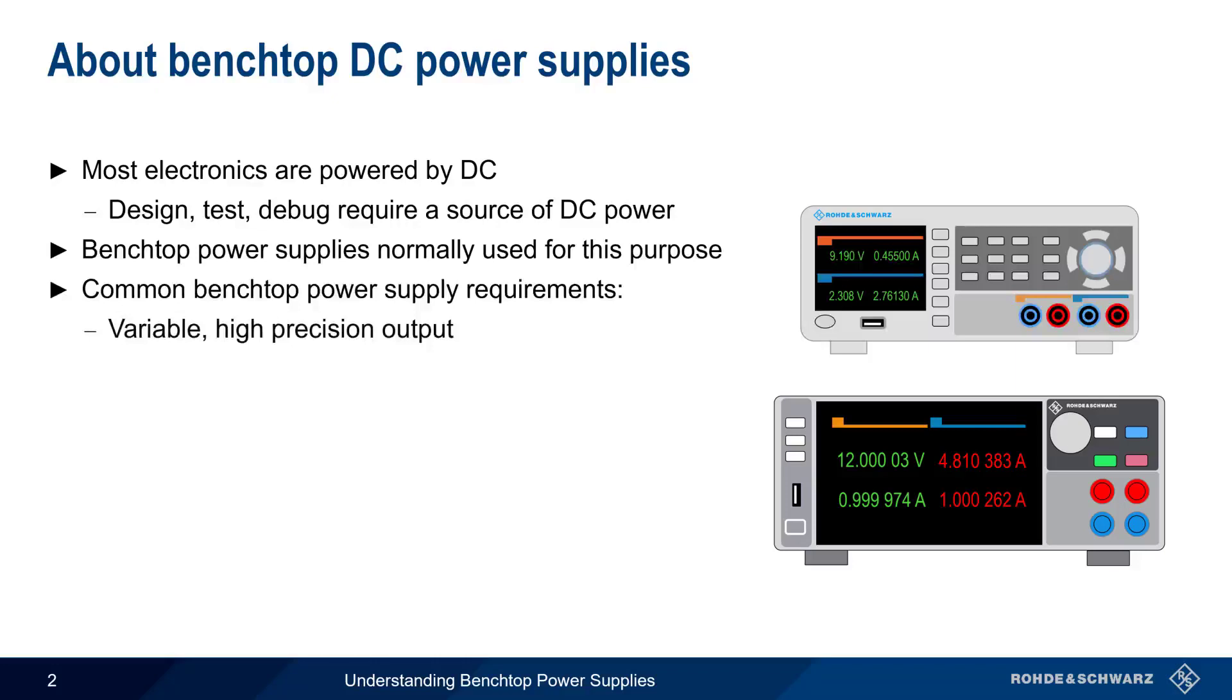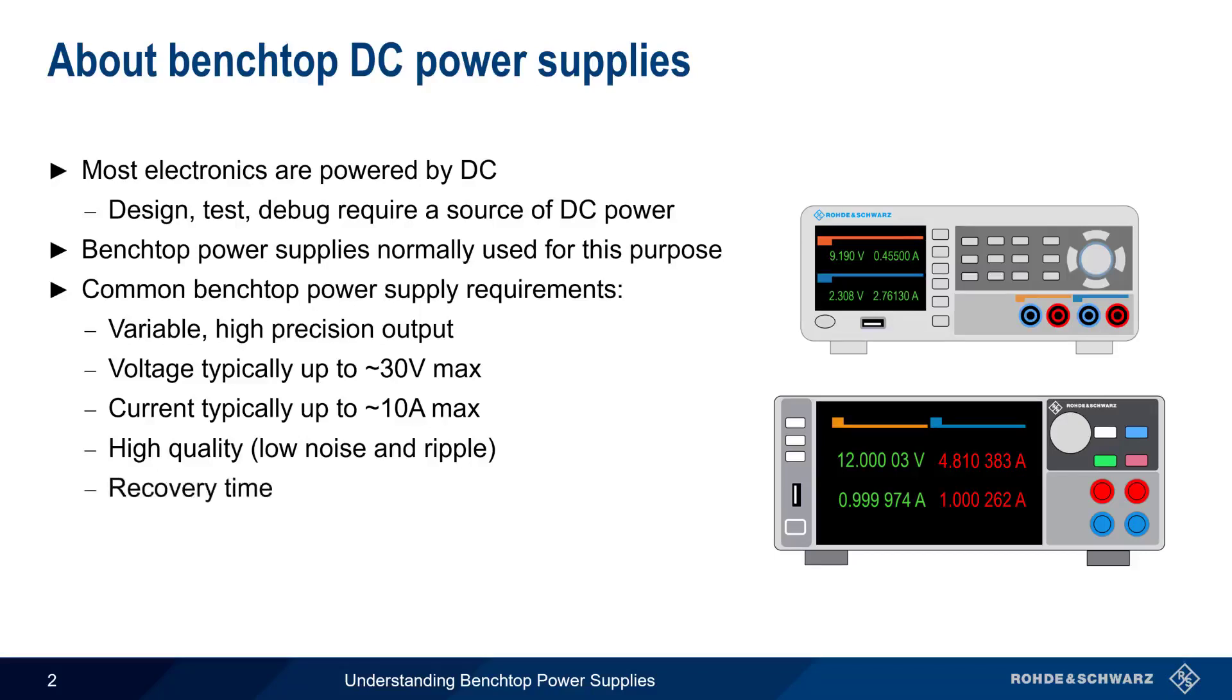The first is a variable, high-precision output. Typically, the maximum voltages are up to about 30 volts, and maximum currents are up to 10 amps. But there are many applications where lower maximum voltages and currents are sufficient. The quality of the supply output is also very important. Undesired variation in the form of noise and ripple should be kept as low as possible. Recovery time, or how quickly the output returns to a stable value after a sudden change, is also a common specification.